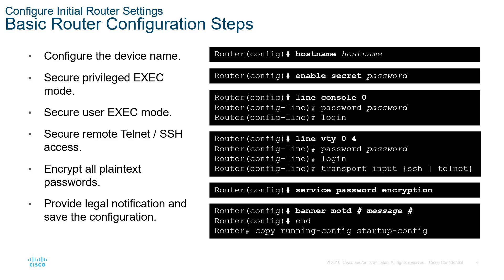With the enable and the password, you can actually set an enable password without using secret. However, secret actually hashes the password. You'll notice with the line connection — line console and line VTY — both passwords are using plain text. We can encrypt the password by enabling the service for password encryption. To do that, we type service password-encryption, and that will encrypt our passwords.